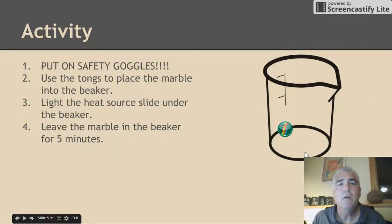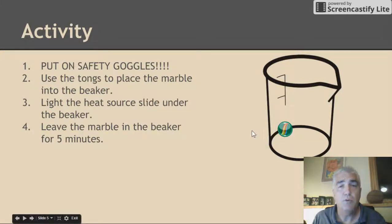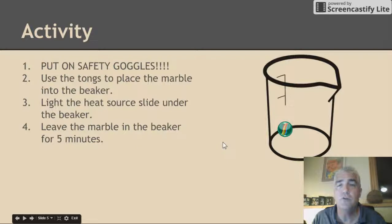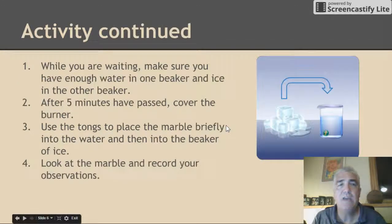Now, our activity. This is highly important — you're going to need safety goggles on this one because we're working with glass and a heat source. Make sure you've got safety goggles on. You're going to use tongs, put the marble in the beaker, and practice picking the marble up with tongs. Place it in an empty beaker that has a heat source underneath it. Light the heat source, slide it underneath the beaker, and let it heat up for about five minutes. While that's heating up, make sure you've got another beaker with plain tap water and another beaker with water and ice in it.